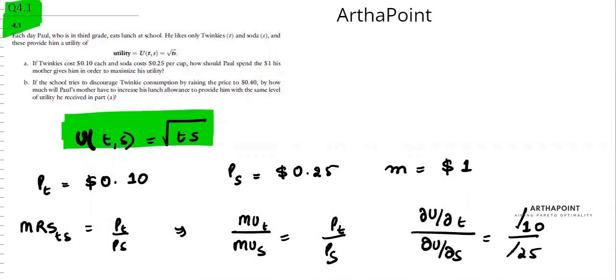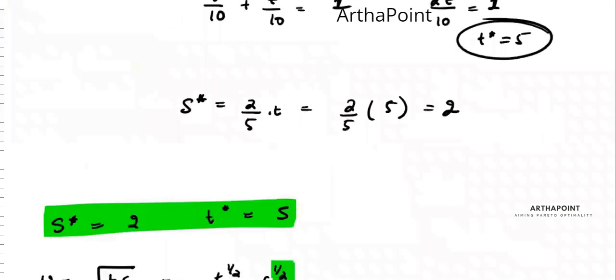Question one of chapter four, let's look at part b. It says if the school tries to discourage twinkie consumption by raising the price to $0.40, by how much will Paul's mother have to increase his lunch allowance to provide him the same level of utility he receives in part a?